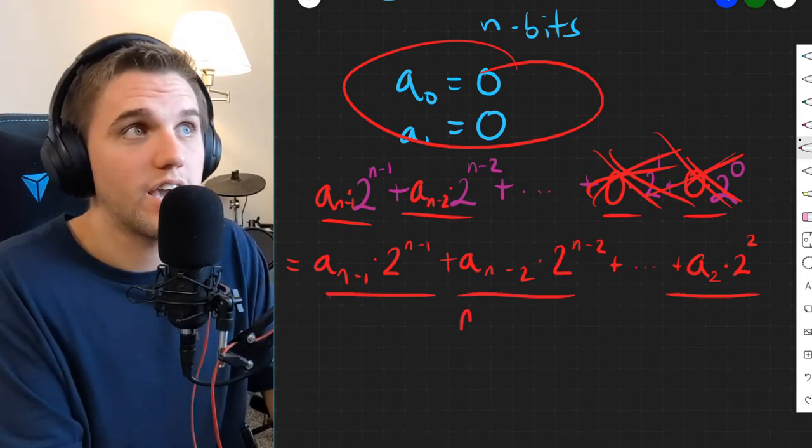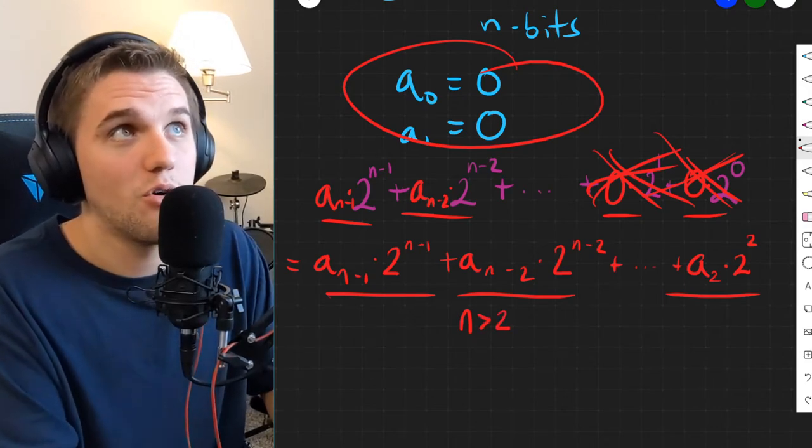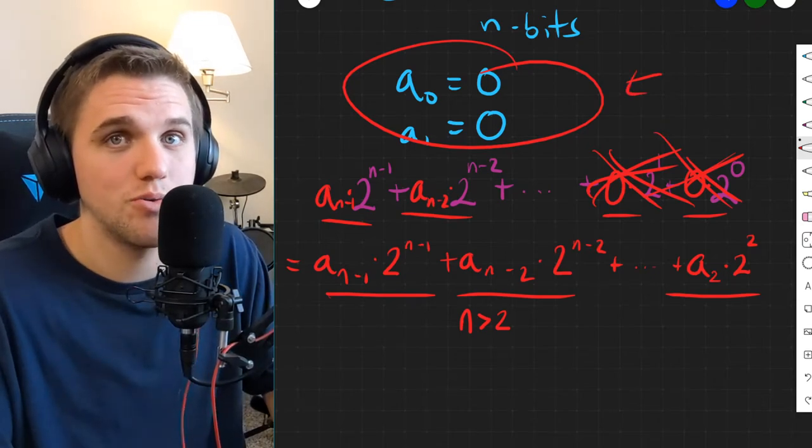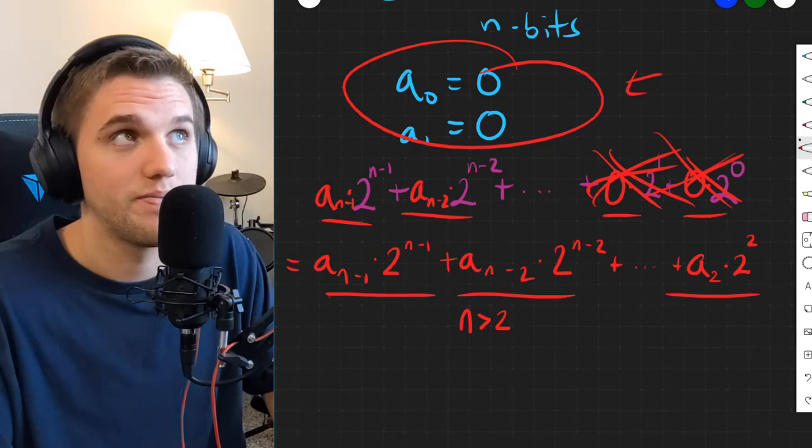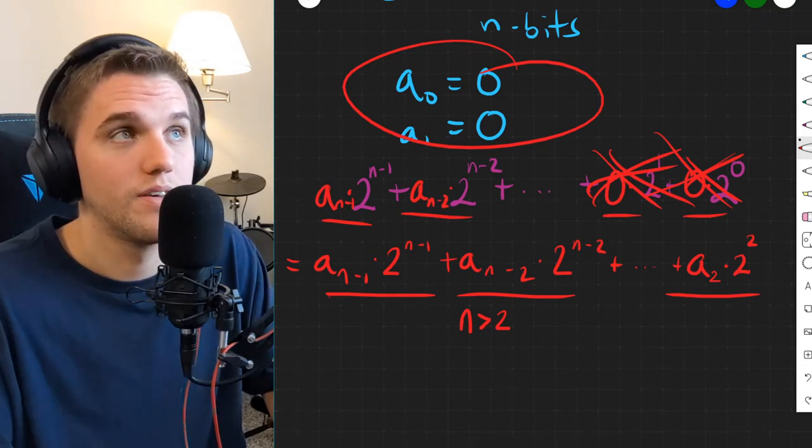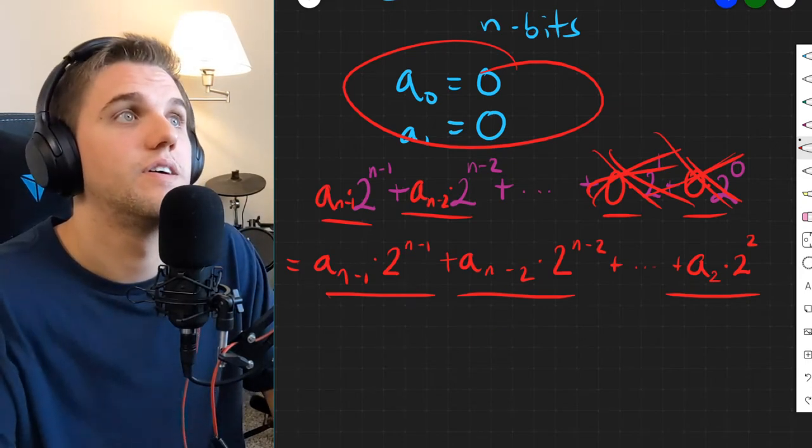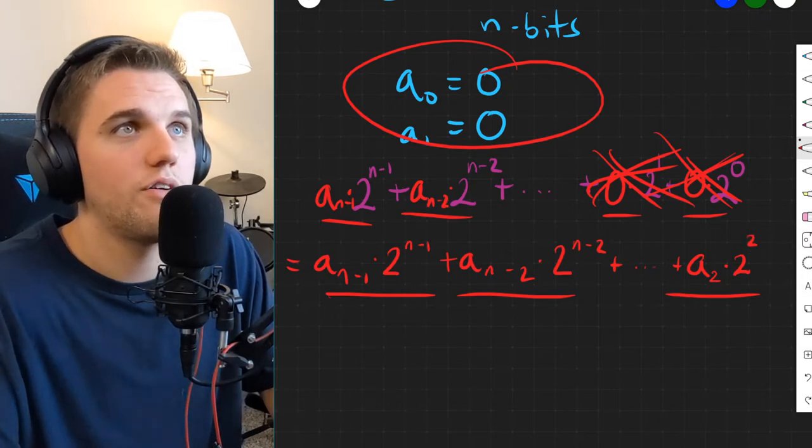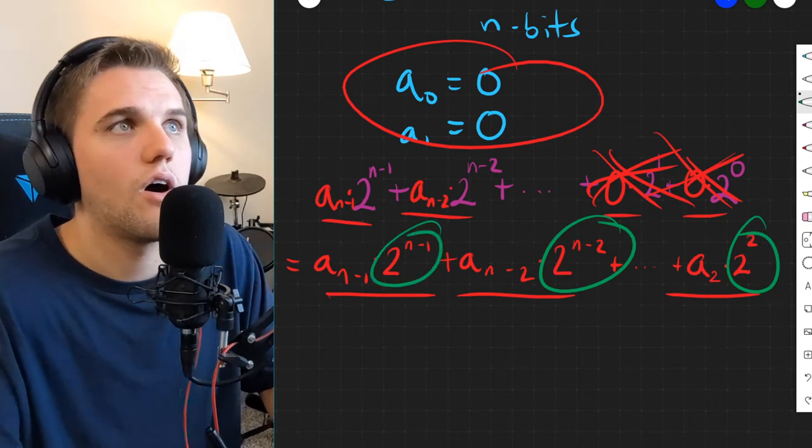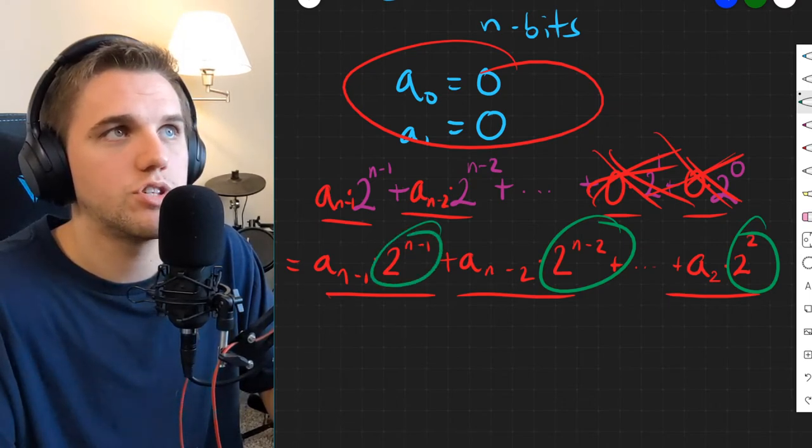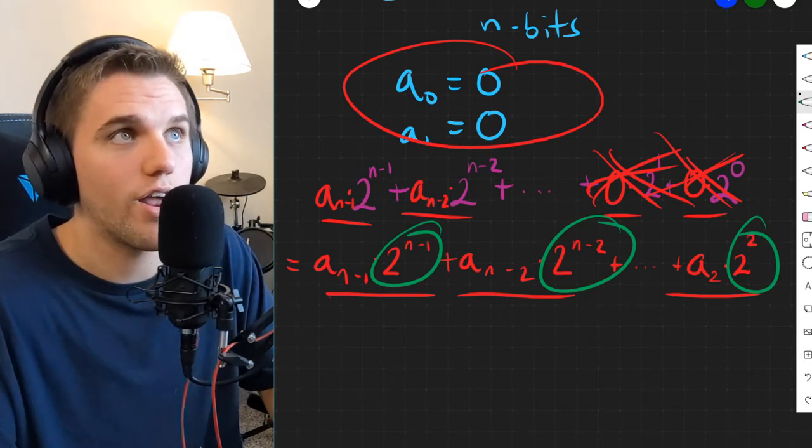Now, what do all of these terms have in common? Well, n in this case is greater than 2. How do I know that? Well, because the leftmost or rightmost two bits have to both be 0. And so that means we need at least three bits. So that means that all of these powers here are all greater than or equal to 2. All the exponents to these powers of 2 are all greater than or equal to 2. That means I can factor out a 4.